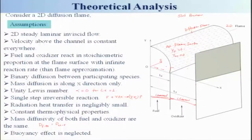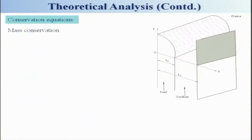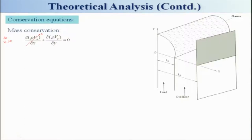Let us look at the conservation equations — mass conservation. For steady flow: ∂(ρVx)/∂x + ∂(ρVy)/∂y = 0. Since Vx = 0, this term vanishes, and integrating gives ρVy = constant. That means the product ρVy remains constant throughout this flame domain.